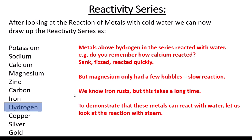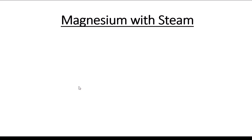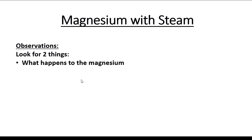We're going to show magnesium, then zinc, then iron reacting with steam. On the worksheet there are three spaces for observations. If you haven't got the worksheet printed off, a file page is absolutely fine — put the heading and write observations underneath. At the bottom of the sheet you'll also do the word equations. There are two things to look for with magnesium: what happens to the magnesium as the reaction takes place, and what happens at the end of the short delivery tube.